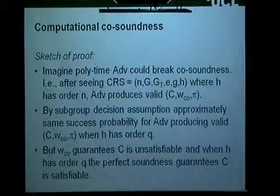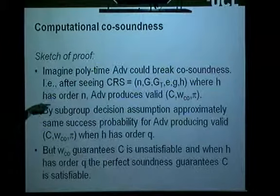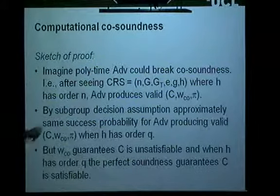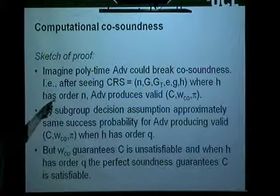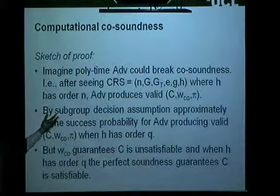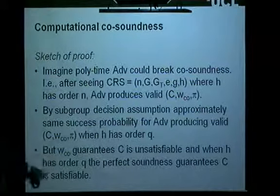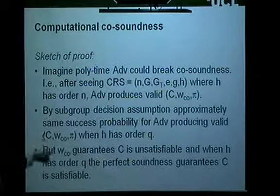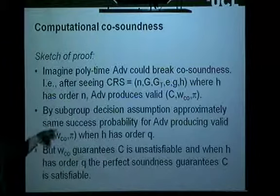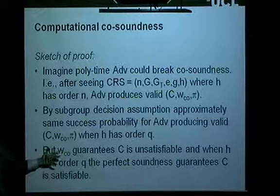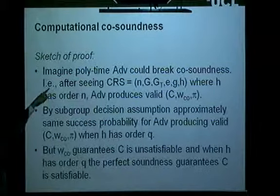We can give a proof that it is co-sound. The sketch is roughly: we start with the reference string where h has order n; the adversary produces a circuit, a co-witness that it's unsatisfiable, and a proof. By the subgroup decision assumption you can't distinguish whether h has order n or order q, so it must have roughly the same probability of producing the circuit, co-witness, and an accepting proof. But this co-witness demonstrates unsatisfiability, and when h has order q we have perfect soundness — reaching a contradiction. Therefore such an adversary doesn't exist.